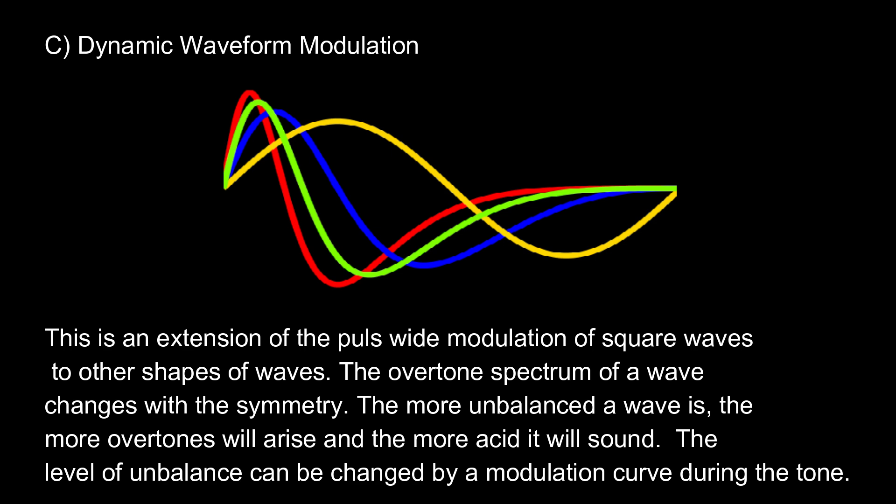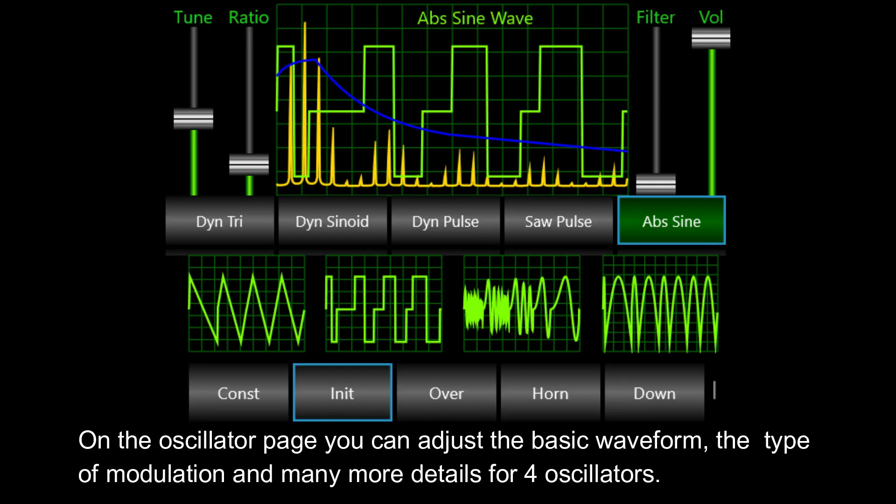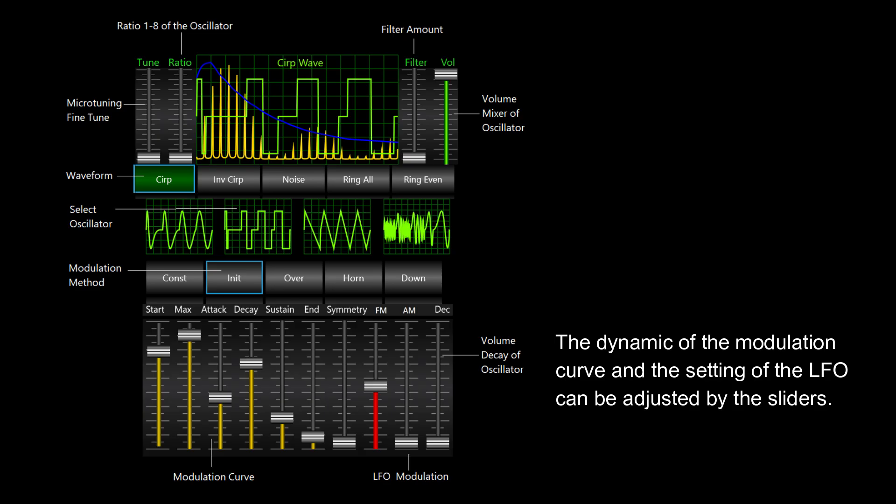The level of unbalance can be changed by a modulation curve during the tone. On the oscillator page, you can adjust the basic waveform, the type of modulation, and many more details for four oscillators. The dynamic of the modulation curve and the setting of the LFO can be adjusted by the sliders.